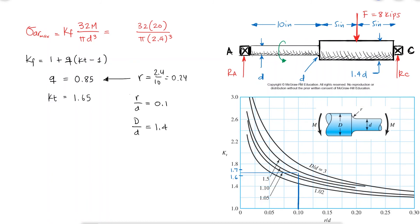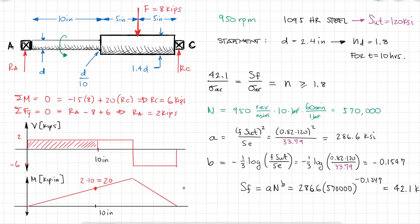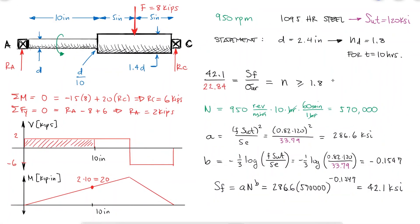With a fatigue stress concentration factor of 1.55, we find an alternating stress of 22.84 ksi, which indeed results in a factor of safety of 1.84, a factor of safety that is higher than the original design factor.